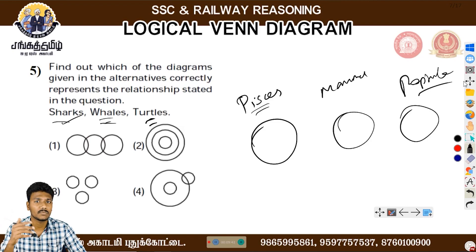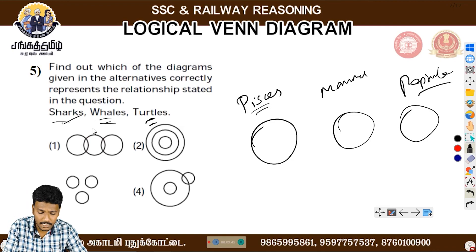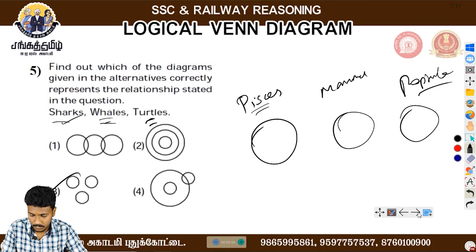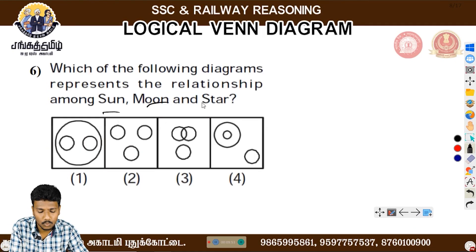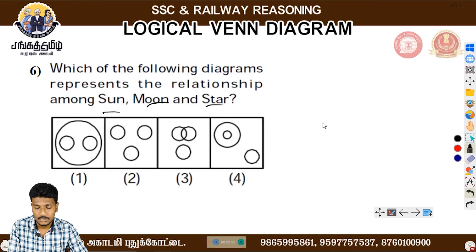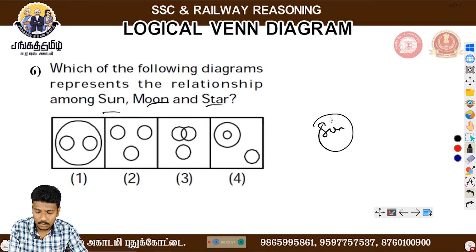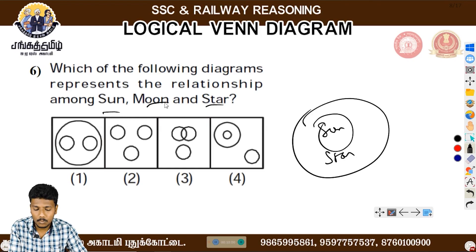Let's take court, lawyer, and judge. What is the answer? This is our answer. Which diagram represents the relationship among Sun, Moon, and Star? Sun is a star. But Moon is not a star — it is a natural satellite.